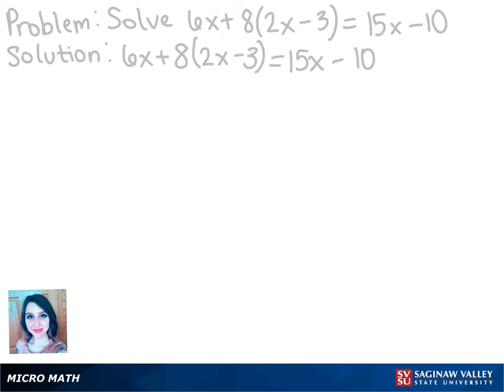The first thing we can see is that inside the parentheses, nothing can be done. So we want to start by distributing this 8 to both terms in the parentheses. That gets us 6x plus 16x minus 24 equals 15x minus 10.